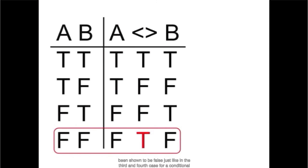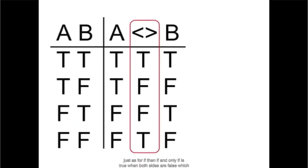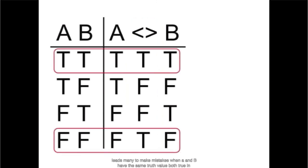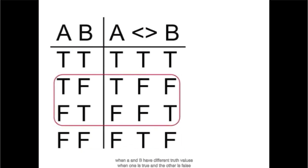Just like in the third and fourth case for a conditional, if and only if is true when both sides are false, which leads many to make mistakes. When A and B have the same truth value, both true in the first case and both false in the fourth case, the biconditional is true. When A and B have different truth values, when one is true and the other is false in the second and third cases, the biconditional is false.